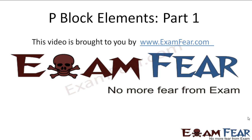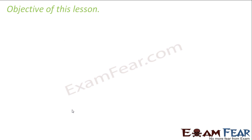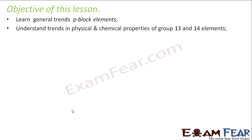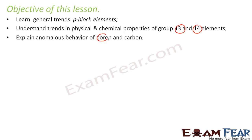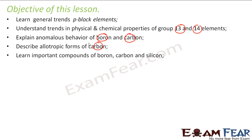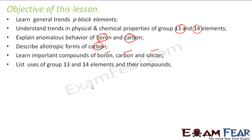Hello friends, this video on p-block elements part one is brought to you by examfear.com. The objective of this lesson is to learn the general trends in the p-block elements. We need to understand the physical and chemical properties of group 13 and group 14. We'll understand the special behavior of boron and carbon, define the allotropes of carbon, and learn some important compounds of boron, carbon, and silicon. We'll also list some uses of group 13 and group 14 elements and their compounds.